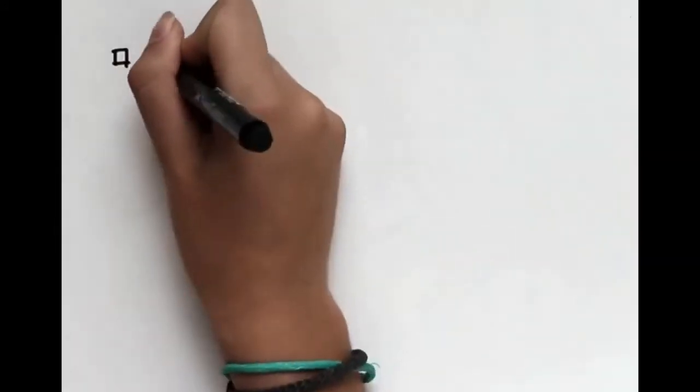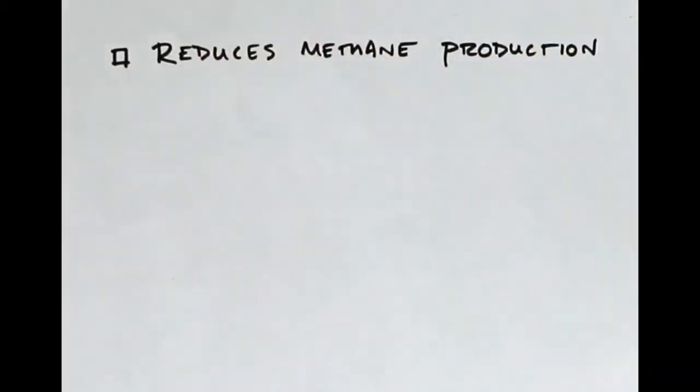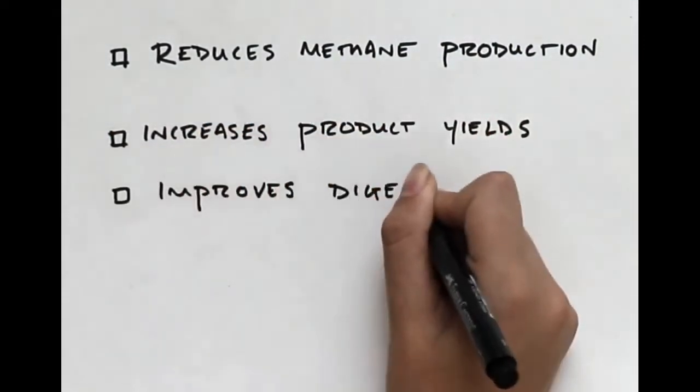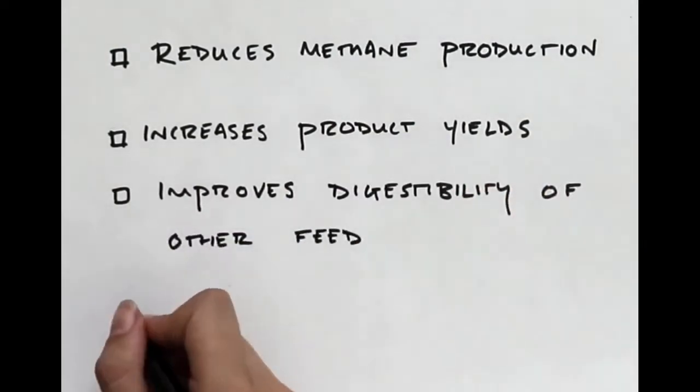If so, these supplements would reduce methane production in the rumen and instead help the cow retain that energy to put towards milk or beef production. Algae might also safely enhance overall feed digestibility.